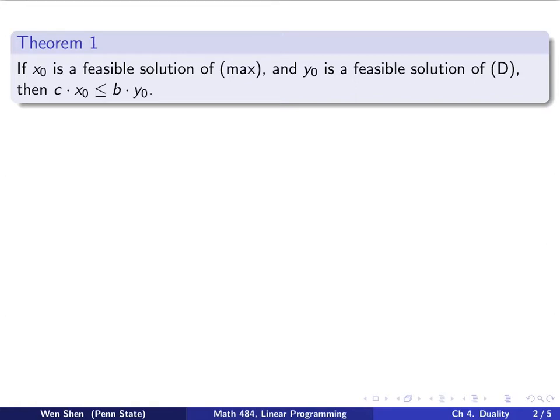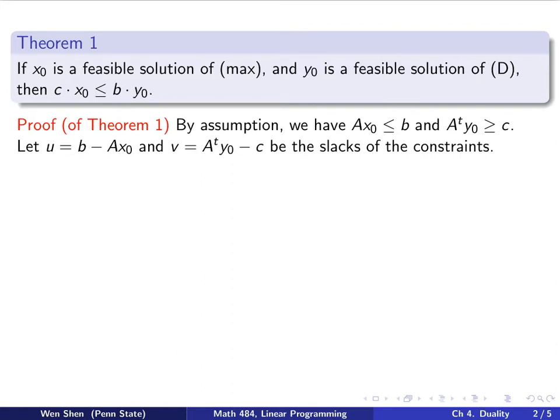Let's see how we can prove this theorem. By assumption, if x0 is a feasible solution, then x0 satisfies the constraint, which is Ax0 less than or equal to b. And y0 is a feasible solution of D, that means y0 satisfies the constraint in D, which is A transpose y0 greater than or equal to c.